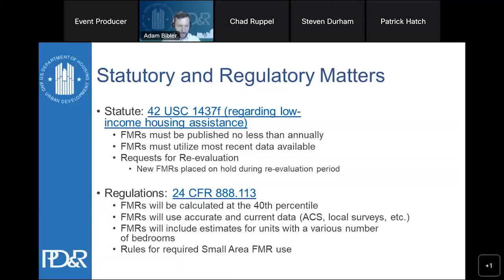FMRs are currently calculated at the 40th percentile of gross rents from the distribution of units occupied by recent movers. The 40th percentile is the point at which 40% of units are below the FMR and 60% are above. This is by definition below average — a common misconception is that the term 'fair market rent' implies it's the average. It's actually meant to be slightly below average to maximize the number of households who get assistance, since this is not an entitlement program.